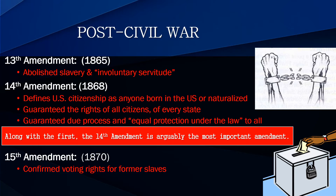The 14th Amendment is arguably the most important amendment of all. It said that if you're born in the U.S. you're a citizen — that counted everybody who had been in slavery, and it still counts people born here today. You can also become a citizen through naturalization. The same amendment also says everybody is guaranteed rights not just from the national government but from state governments too. It guaranteed due process and equal protection under the law for everybody. In the Gideon case, he argued he wasn't equally protected because he couldn't afford a lawyer. In the Gault case, the minor was not treated fairly and didn't have equal protection.